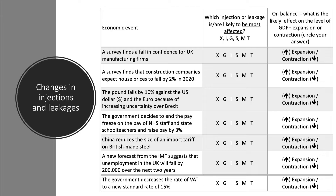Our first event: a survey finds a fall in confidence for UK firms. The likely effect is a fall in planned investment — businesses are less confident about demand and output, and other things being the same, that will lead to a contraction in GDP. Second: a survey finds that construction companies expect house prices to fall by two percent in 2020.